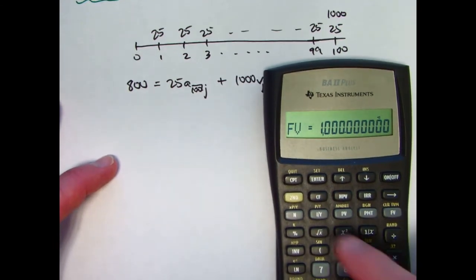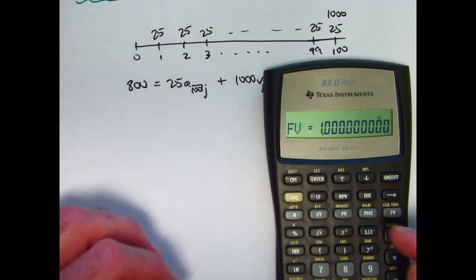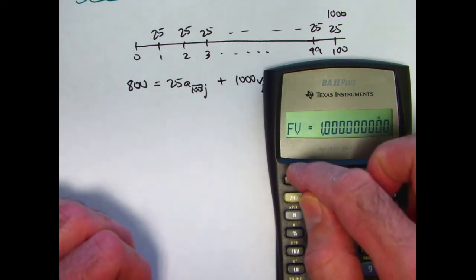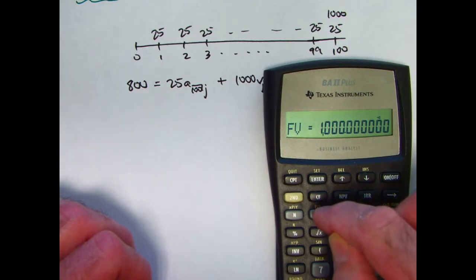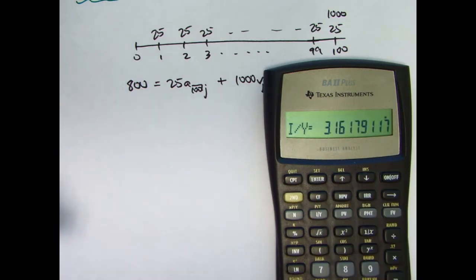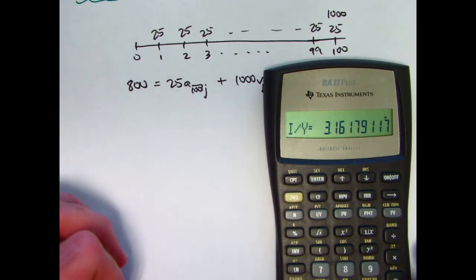Now I'm ready to compute the interest per year, which will really be interest per quarter. It's going to give it to me as a percentage. CPT compute I/Y, which here means interest per quarter, and that's about 3.16%.